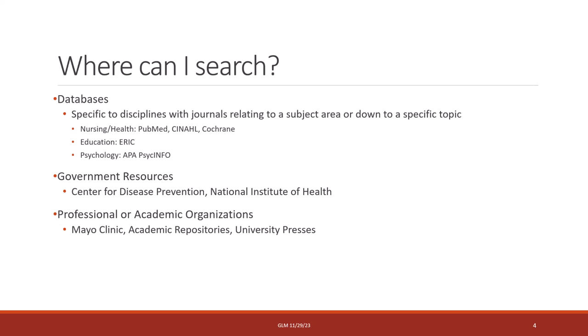There are various avenues for conducting research. The primary way will probably be through databases, which can be specific to disciplines — such as PubMed, CINAHL, and Cochrane for nursing and health, or ERIC for education — providing focused academic journals. However, it's important not to discount other resources through the library or credible sources such as government resources, like the Centers for Disease Control and Prevention and the National Institutes of Health. Additionally, professional or academic organizations, academic repositories, or university presses can be helpful in finding different research.